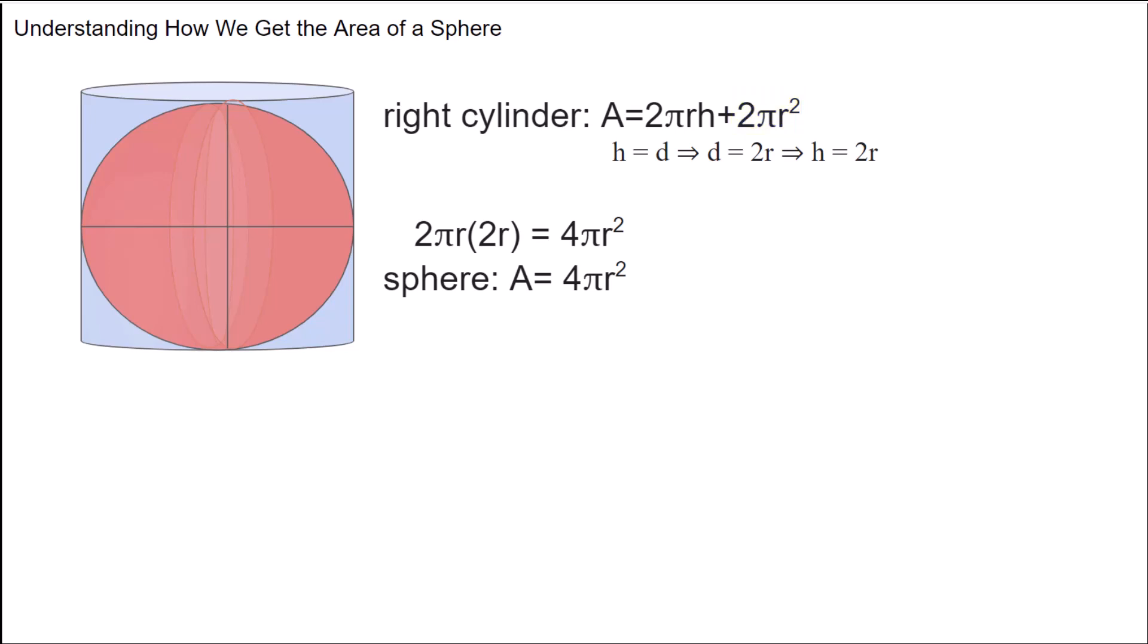Now similar to how we worked out the area of a circle, we know that the area of a sphere is equal to a right cylinder not including the end caps. So basically if we take the first term from the formula for the area of a right cylinder, that gives us the area of a sphere.